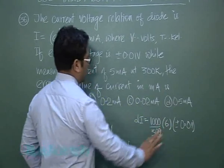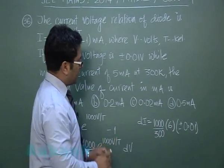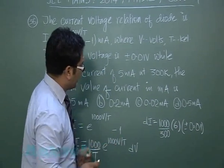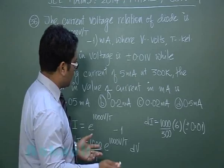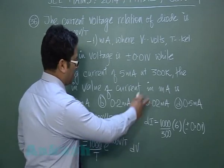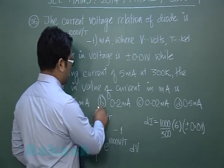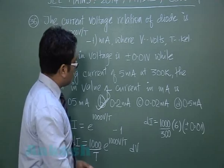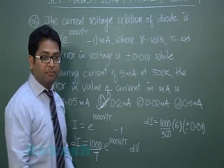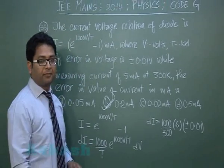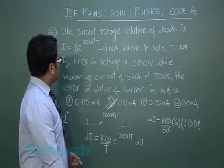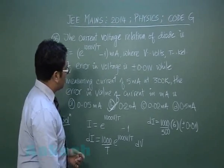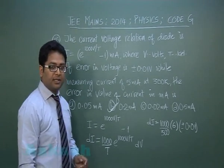With all values in their respective units, the calculation gives an error of 0.2 milliampere, which corresponds to option B. Now let's proceed to question number 37.